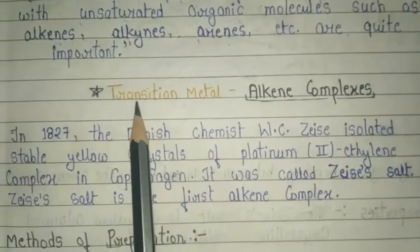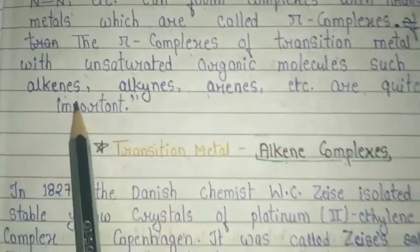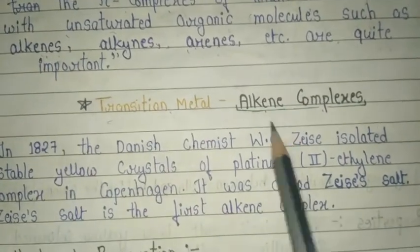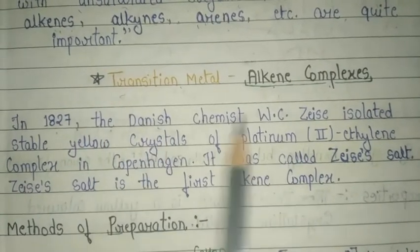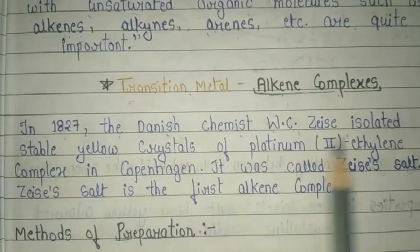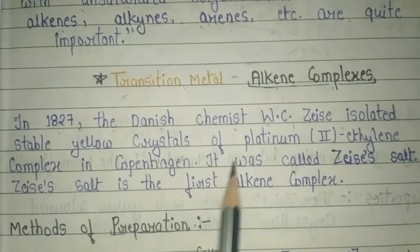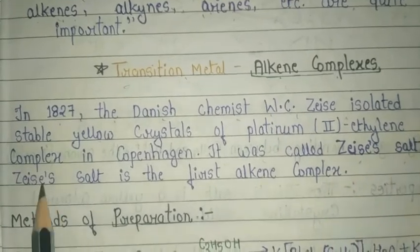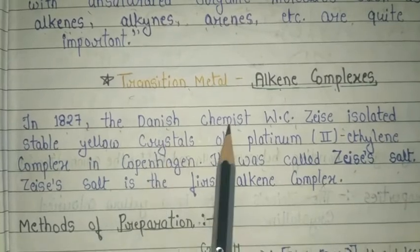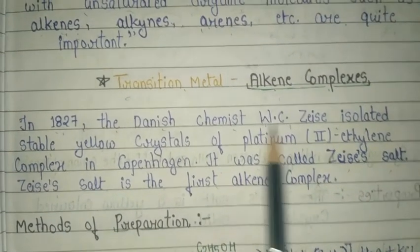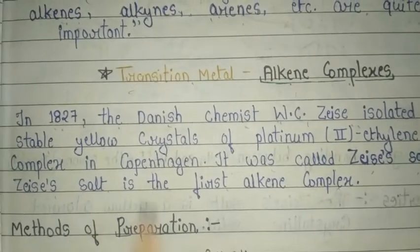The most important topic among transition metal complexes is alkene complexes. In 1827, Danish chemist W.C. Zeise isolated a stable yellow crystalline platinum-ethylene complex in Copenhagen. It was called Zeise's salt. Zeise's salt is the first alkene complex.